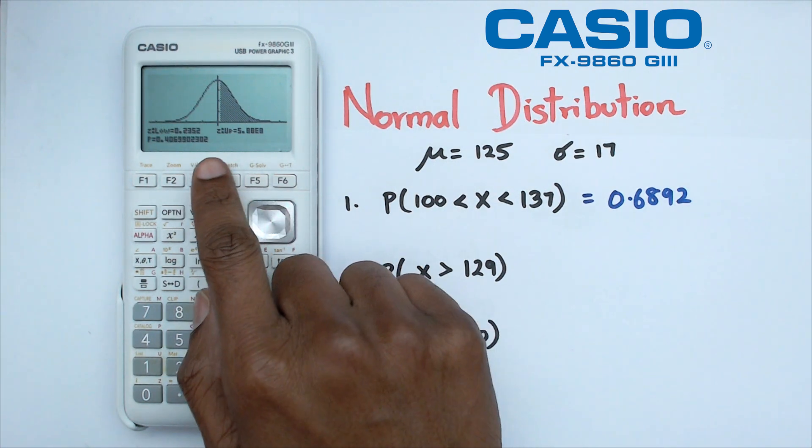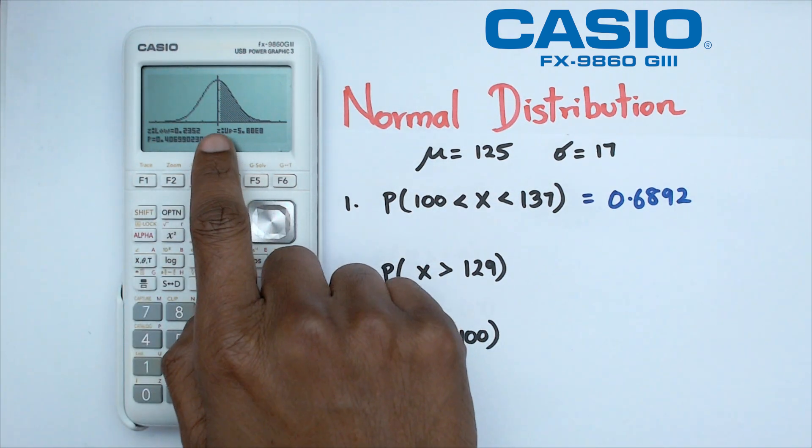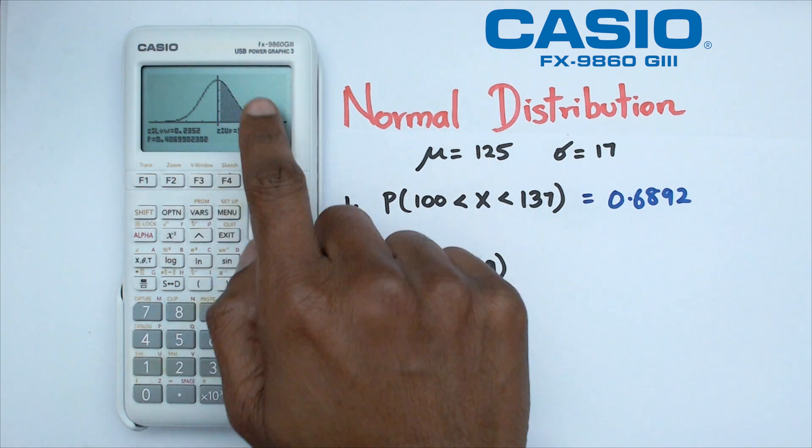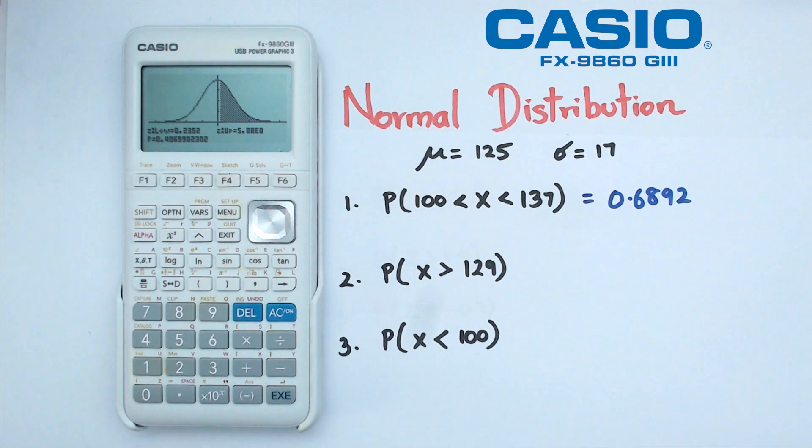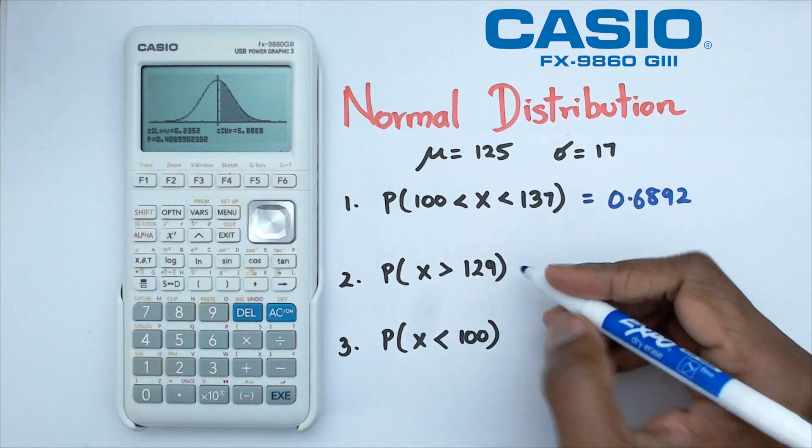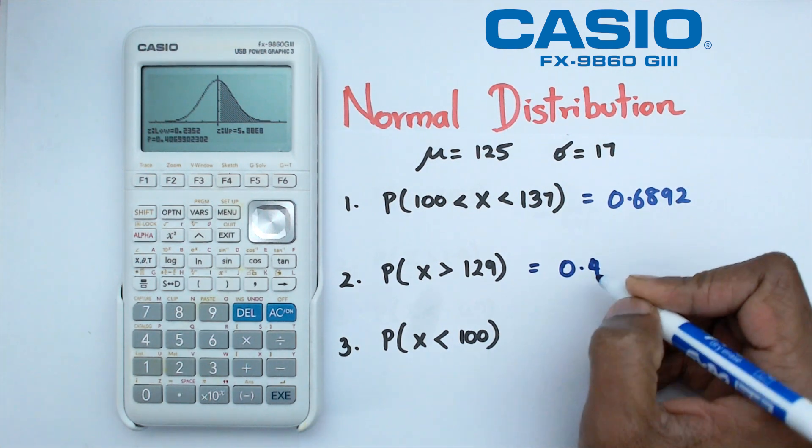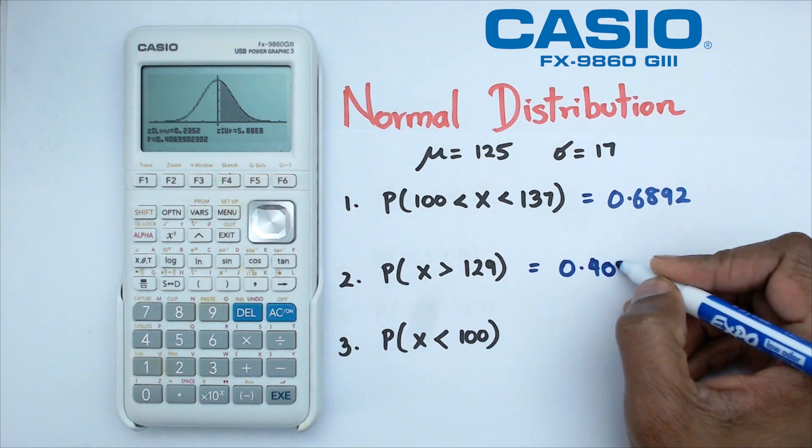We're going to go down and click on draw again. And when we do this, we actually can see the diagram, which shows that the mean, which is 125, is going to be in the middle. 129 is probably just a little bit to the right. And we're looking for X greater than 129. So in this case, the probability is equal to 0.4070.